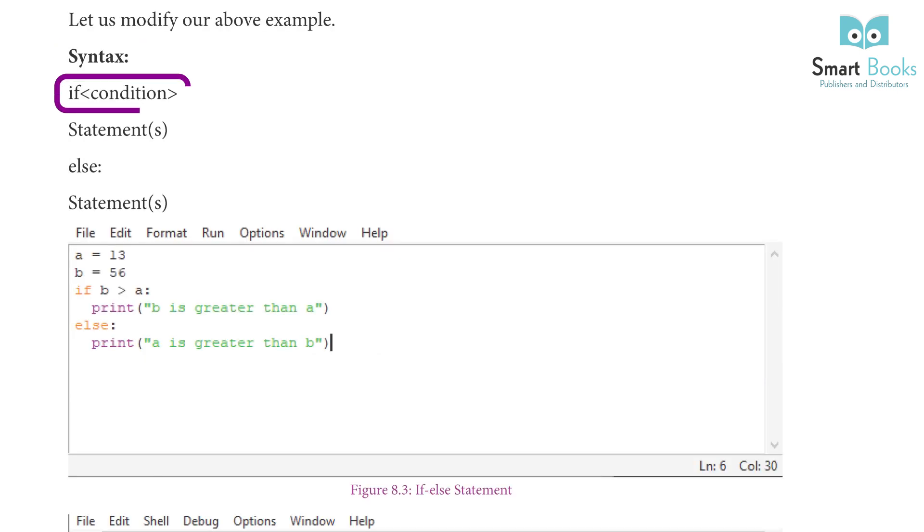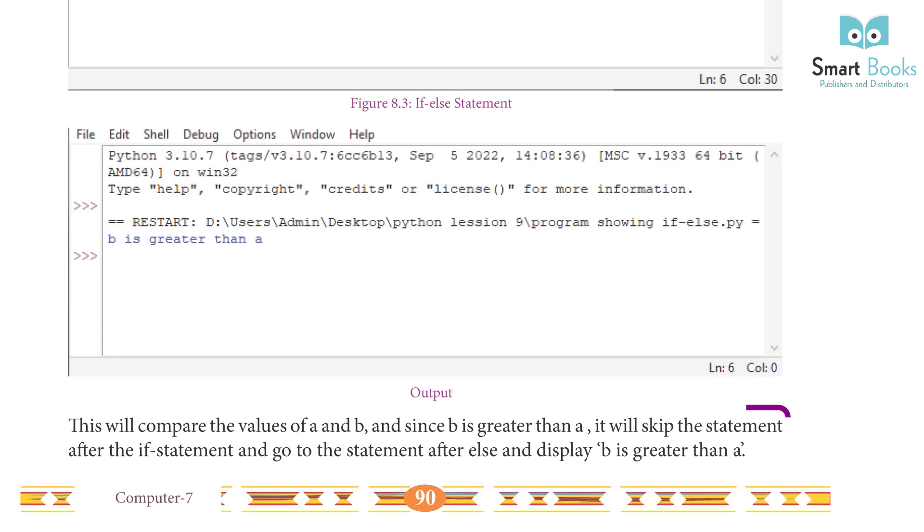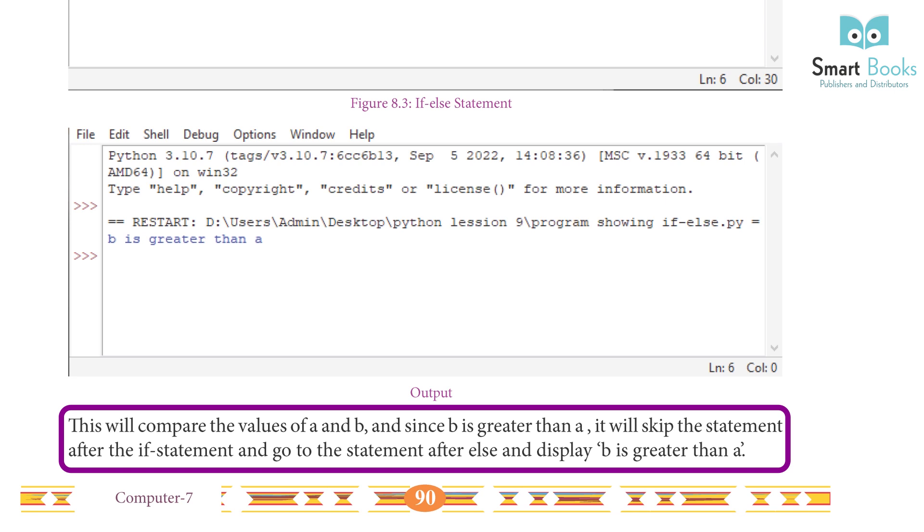Syntax: if condition: statements else: statements. This will compare the value of a and b. Since b is greater than a, it will skip the statement after the if statement and go to the statement after else, and display 'b is greater than a.'